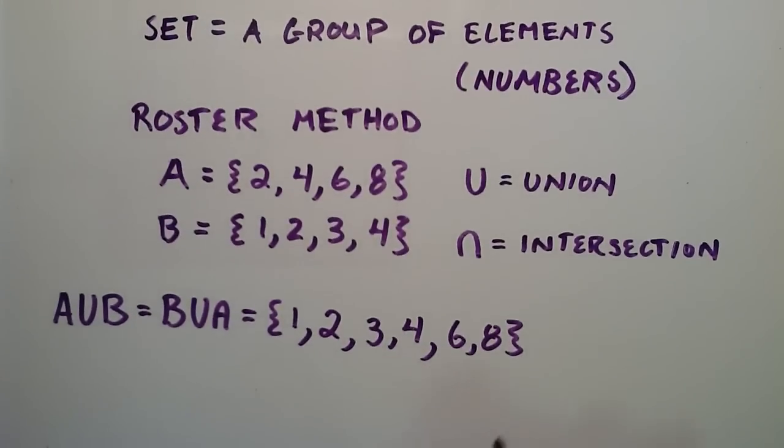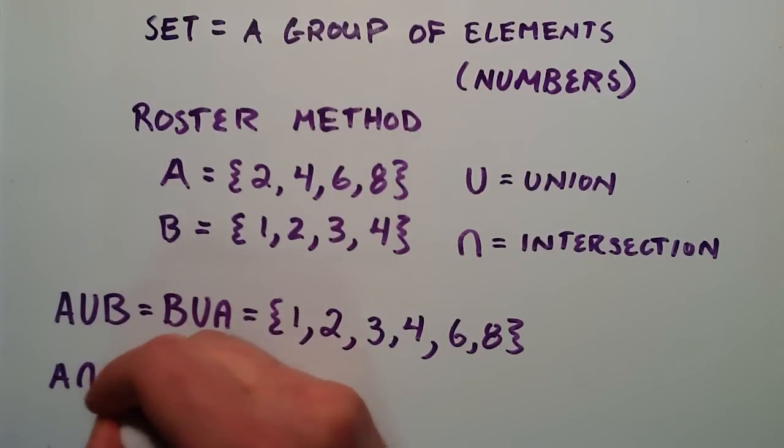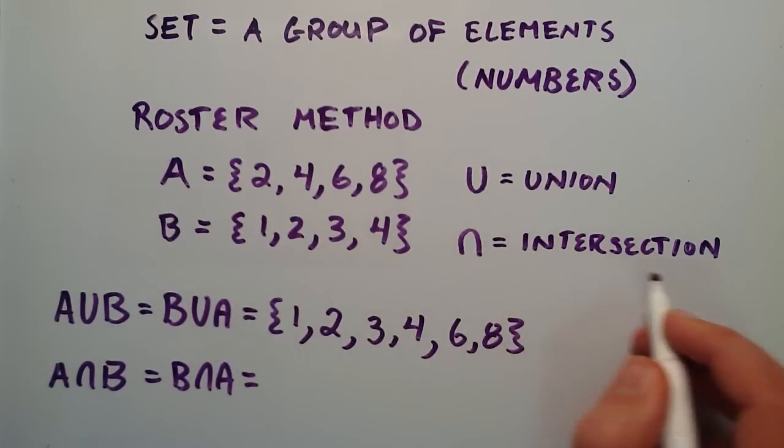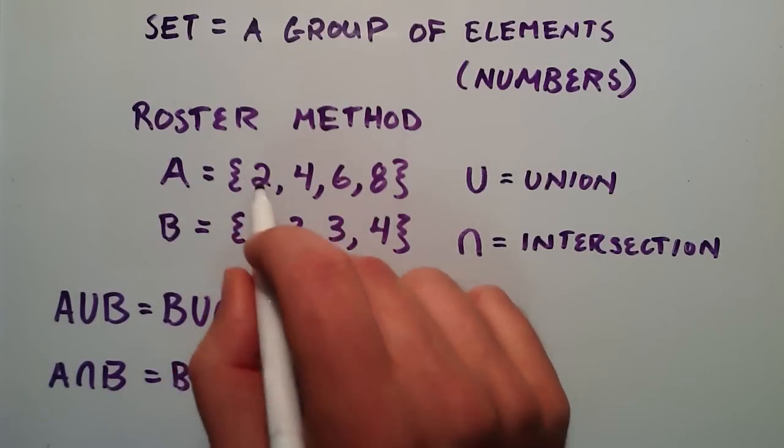On the other hand, we have the intersection. We can write A intersect B, or B intersect A. The intersection is basically only the elements that are in both A and B.